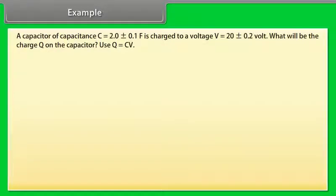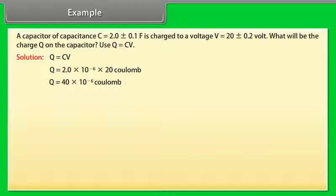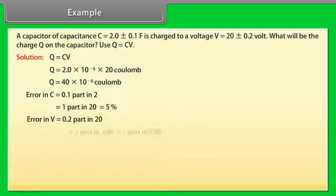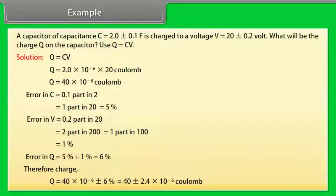Example: Let's take an example of errors. A capacitor of capacitance C is equal to 2.0 plus minus 0.1 microfarad is charged to a voltage V is equal to 20 plus minus 0.2 volt. What will be the charge Q on the capacitor? Use Q is equal to CV. Let us see the solution. Q is equal to CV. On calculating, we get Q is equal to 40 into 10 to the power minus 6 Coulomb. Error in C is equal to 0.1 part in 2 is equal to 5 percent. Error in V is equal to 0.2 part in 20 is equal to 1 percent. Error in Q is equal to 5 percent plus 1 percent is equal to 6 percent. Therefore, charge Q is equal to 40 plus minus 2.4 into 10 to the power minus 6 Coulomb.